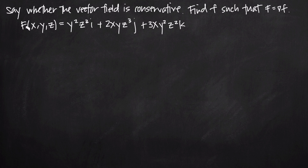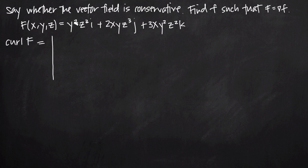One way that we can tell whether or not F is conservative is to calculate the curl of this vector field F. If the curl is equal to zero, then we know that the vector field is conservative. When we have a vector field in three-dimensional space in terms of three variables x, y, and z, instead of just two variables, calculating curl is an easy and convenient way to determine whether or not the vector field is conservative.